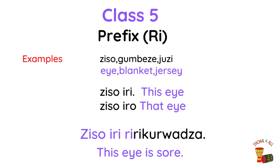Class 5, prefix ri. Example nouns: ziso, gumbeze, juzi. This class also includes nouns borrowed from English, for example juzi, or other words like renji, bachi.